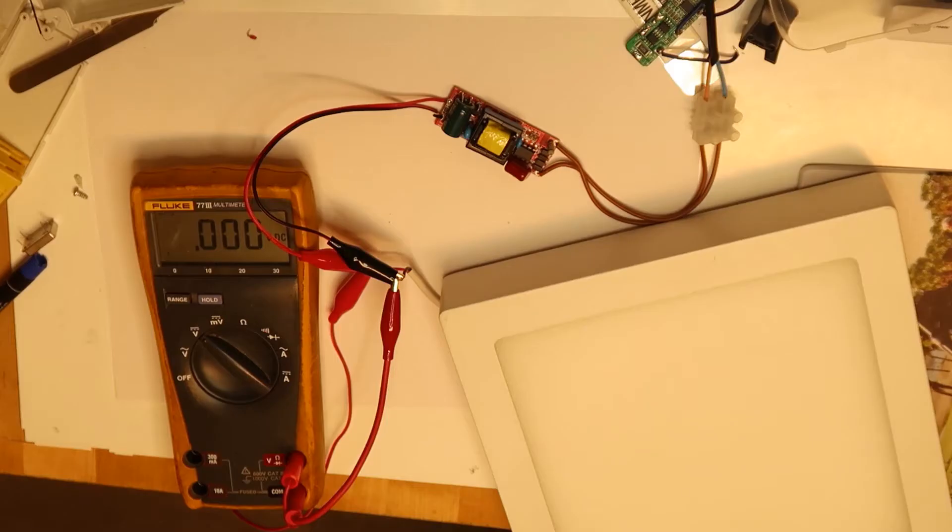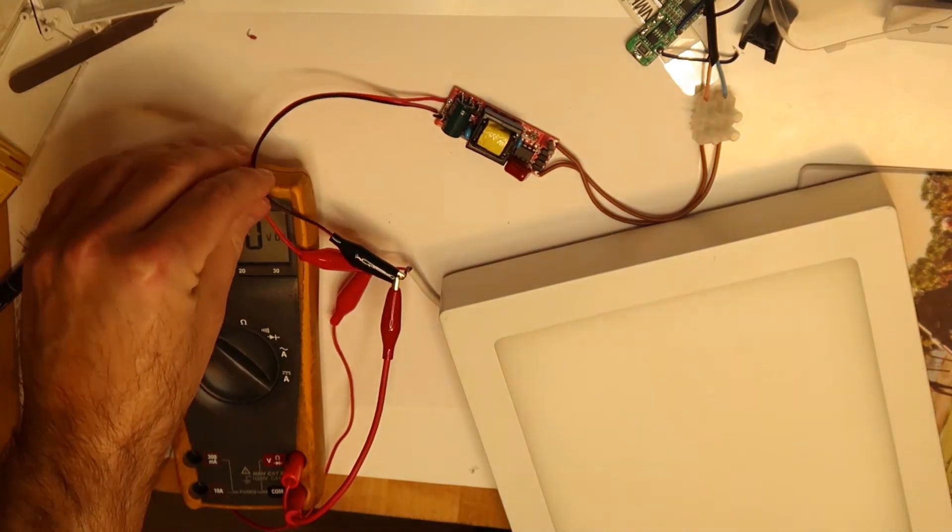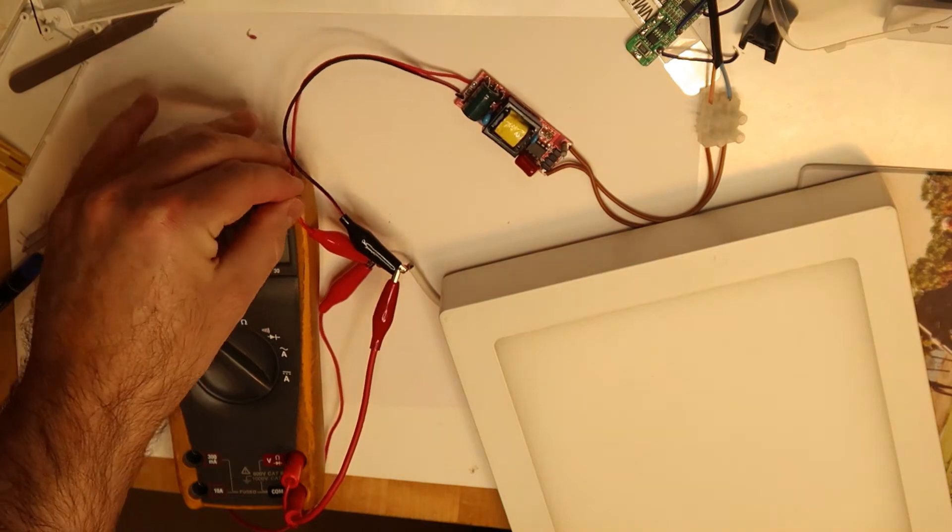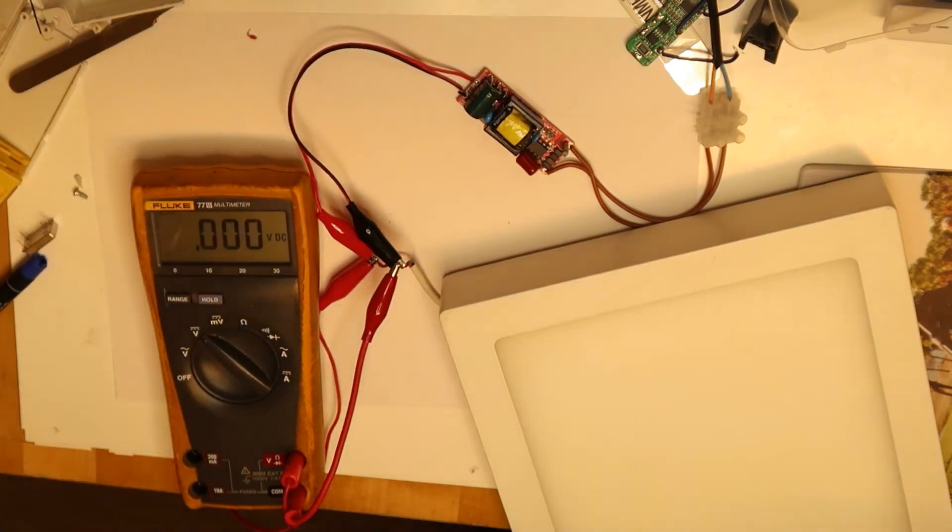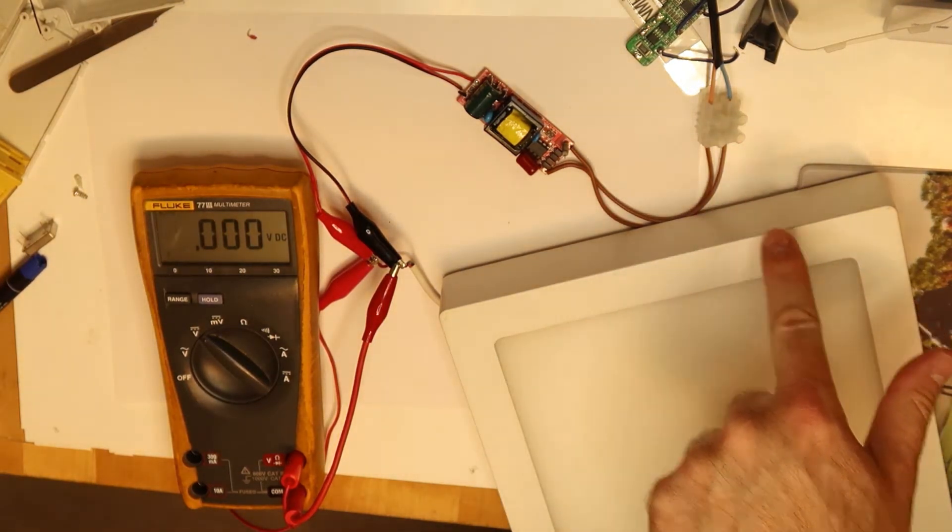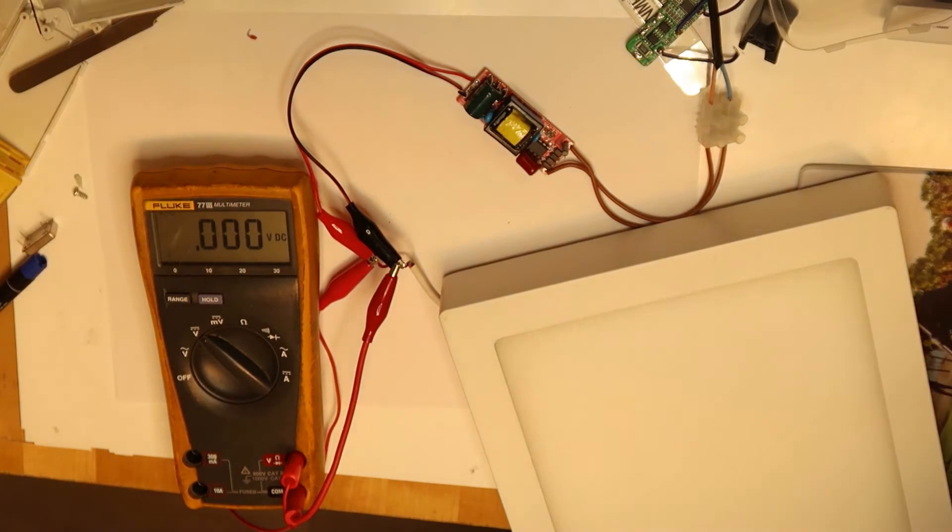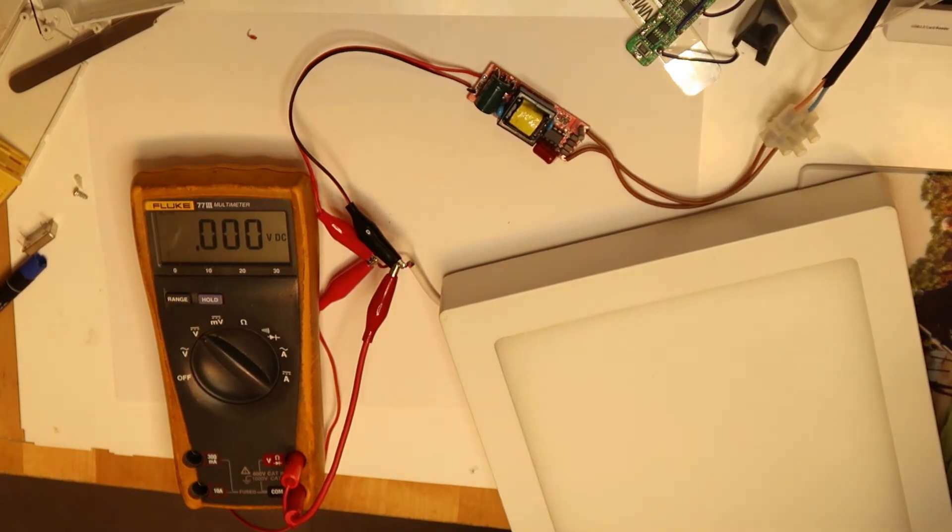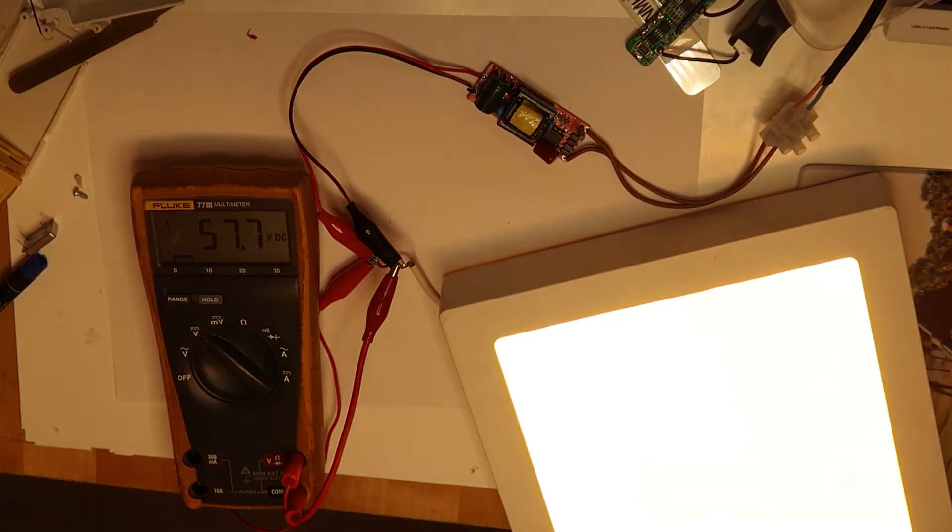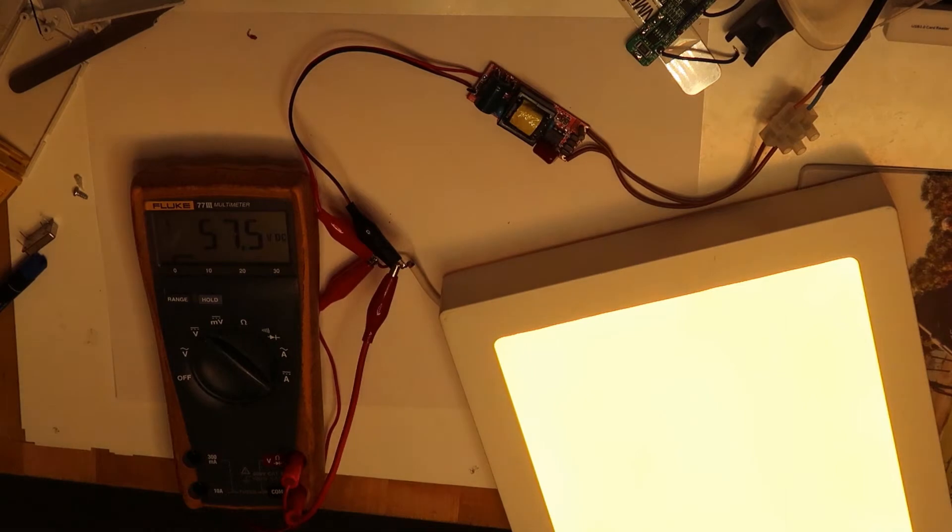So let's put and measure everything. Everything is now connected. I've connected the DVM to see the voltage. Hopefully nothing will explode. Be very careful, it's now 220 input. I want to measure the actual voltage. By the way the LED is of course lit because everything is connected. So let's see.